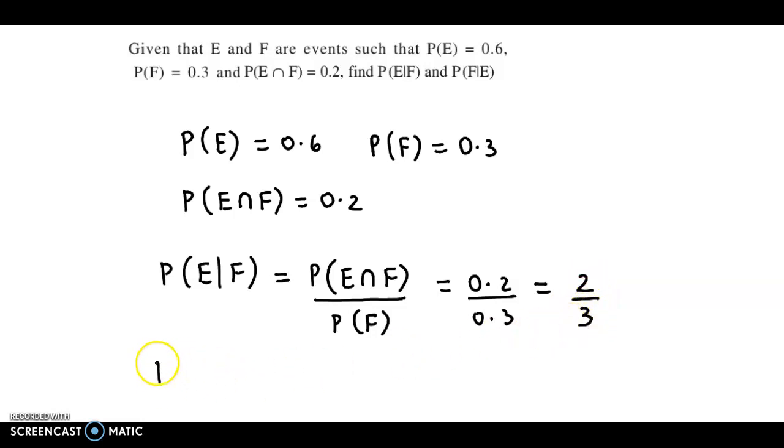Next, we find probability of F given E. This is obtained by probability of E intersection F upon probability of E. Here, the intersection has probability 0.2 and E has probability 0.6. Simplifying this, we get the answer as 2 by 6, or this could be written as 1 by 3.